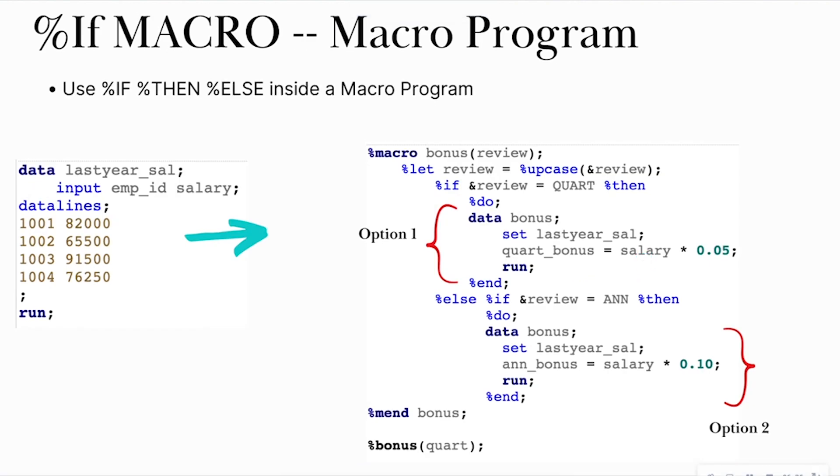All right, so one of the last cases I want to talk about that is probably one of the more complex cases is how we just use the if-then-else logic inside of a complete macro program to give us different results. So let's look at this code. So I have, once again, a data set, and I'm going to put this data set in the description. And I'm creating a data set that has employee IDs and their corresponding salary. So now I want to create a program where I'm able to calculate the bonus. So they can either get a quarterly bonus or an annual bonus. And those are going to be different calculations for me. And it's going to be based off of what their last year's salary was. So in this case, I call the macro bonus, and I put review in here.